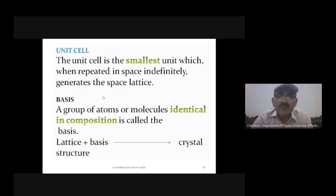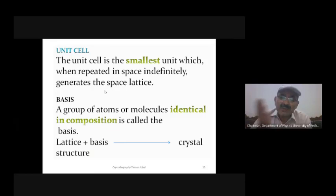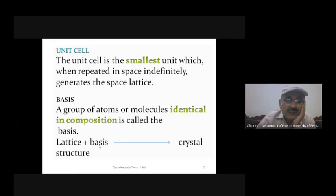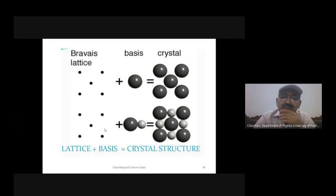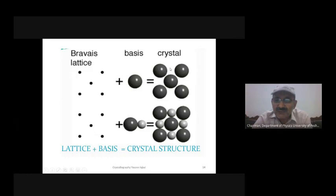When you have the highest possible symmetry, the unit cell obeys more symmetry conditions. The unit cell is the smallest unit which, when repeated indefinitely in space, generates the space lattice. The basis is an atom, a group of atoms, or molecules identical in composition, which can be placed on each lattice point. Lattice plus basis together gives you a crystal.